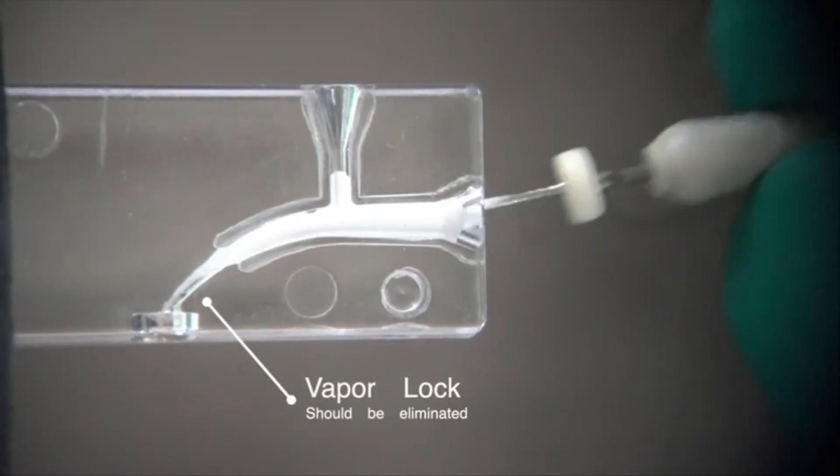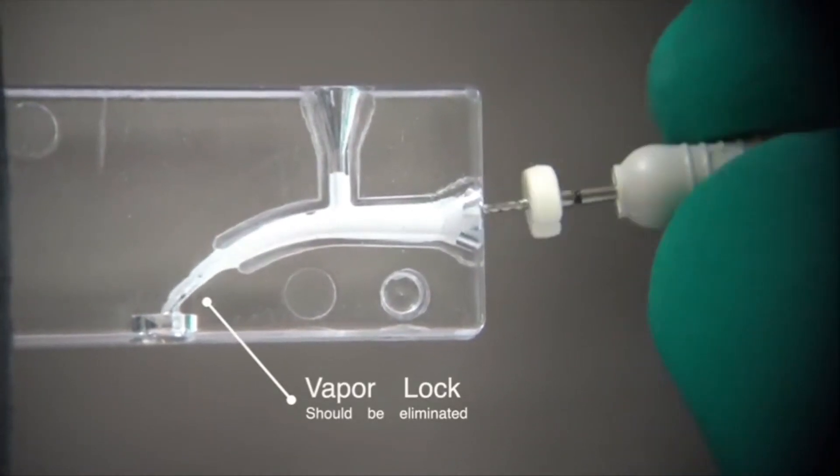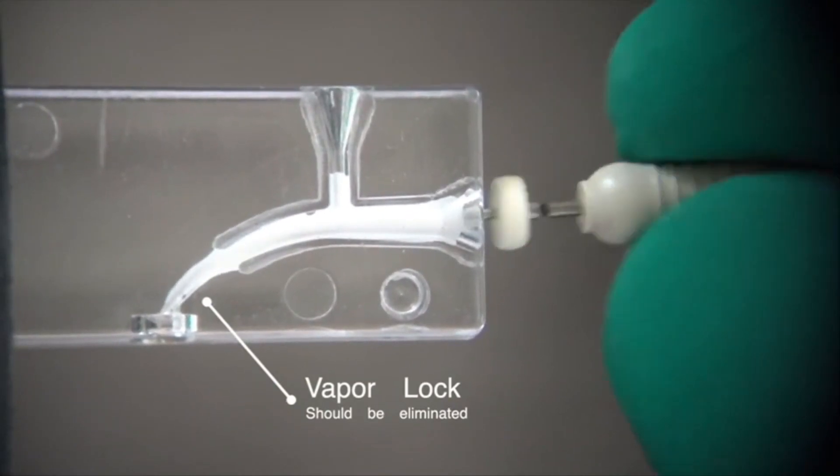It's done in order to puncture the vapor lock that is present at the apical part of the canal. You need to puncture it using a file; whichever file size you use is fine.